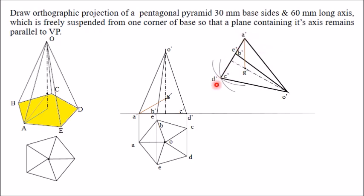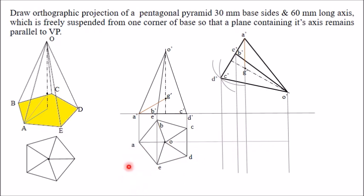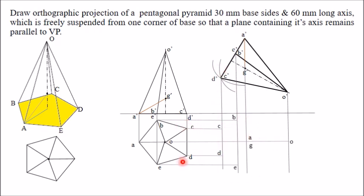Now project all these points using vertical projectors. Draw horizontal lines from key points like A and O to intersect the vertical projectors. The intersection of the vertical projector of A and the horizontal projector of A gives point A in the new top view. Similarly, obtain all points O, B, C, D, and E. For example, B in the front view projects horizontally and intersects the vertical projector of B to give B in the top view. Mark all these points in this way.